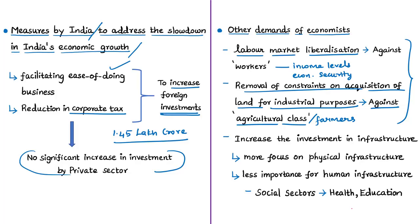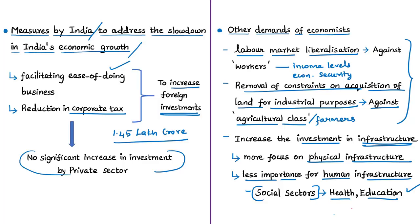Another group of economists advocates increasing investment in infrastructure, but the author notes they focus only on physical infrastructure — transportation and energy — and rarely talk about investment required in human infrastructure, meaning education and health. The author states that even Nobel laureate Abhijit Banerjee, while making a strong case for transferring income to the poor, has not made a strong point about the potential of investment in social sectors like health and education and their role in creating demand in the economy.